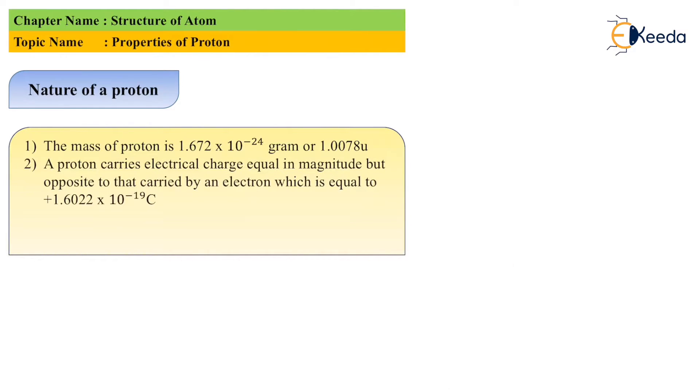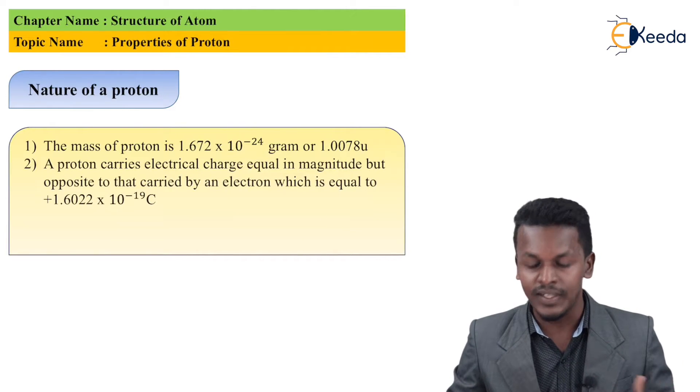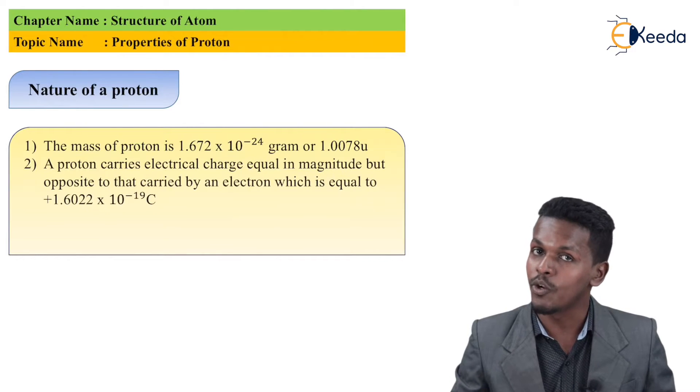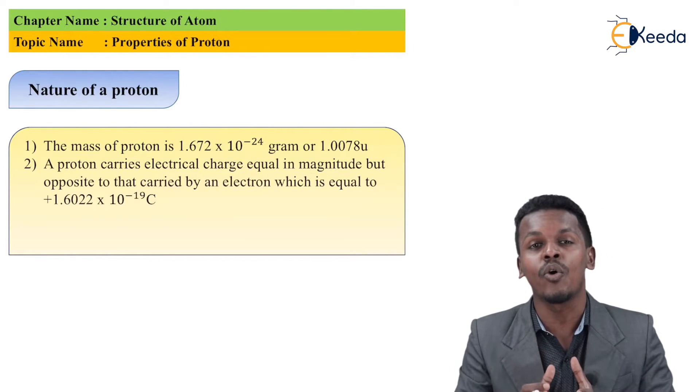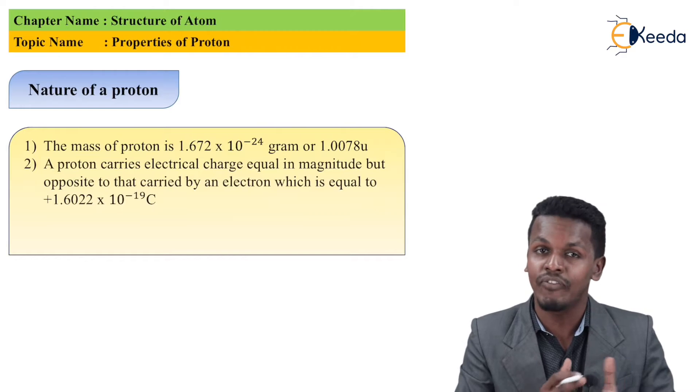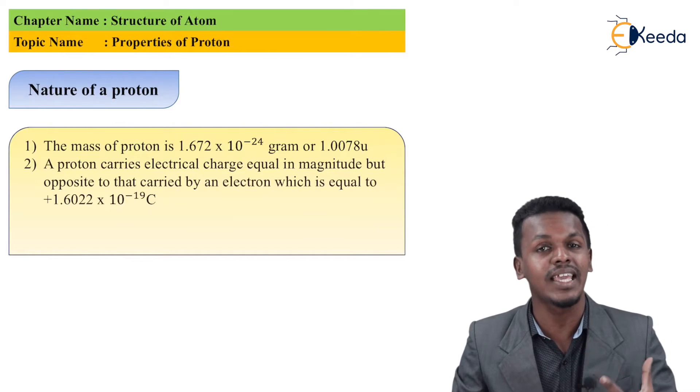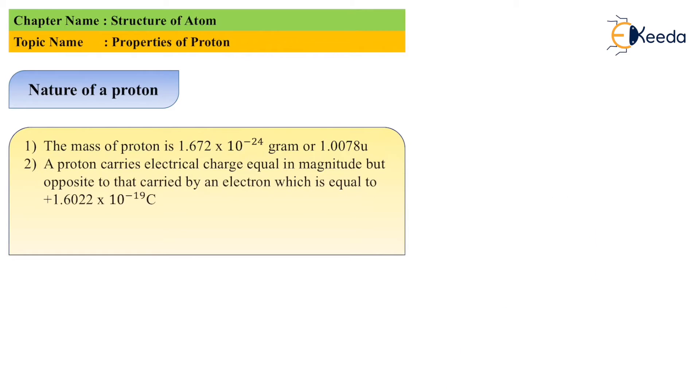The next property is that the proton has a charge of 1.6022 × 10^-19 coulombs. This is the same magnitude as the charge of the electron, but the difference is that the proton has a positive charge: +1.6022 × 10^-19 coulombs.